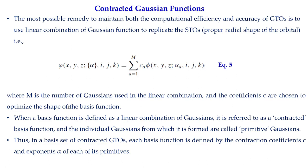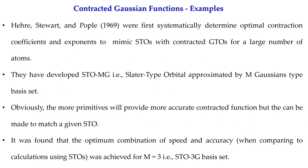If we take m equal to three, three Gaussians are linearly combined to form the total contracted basis function. The individual Gaussians — the three functions combined — are called primitive functions or primitive Gaussians. Thus, in a basis set of contracted GTOs, each basis function is defined by contraction coefficients c and an exponent alpha for each primitive.